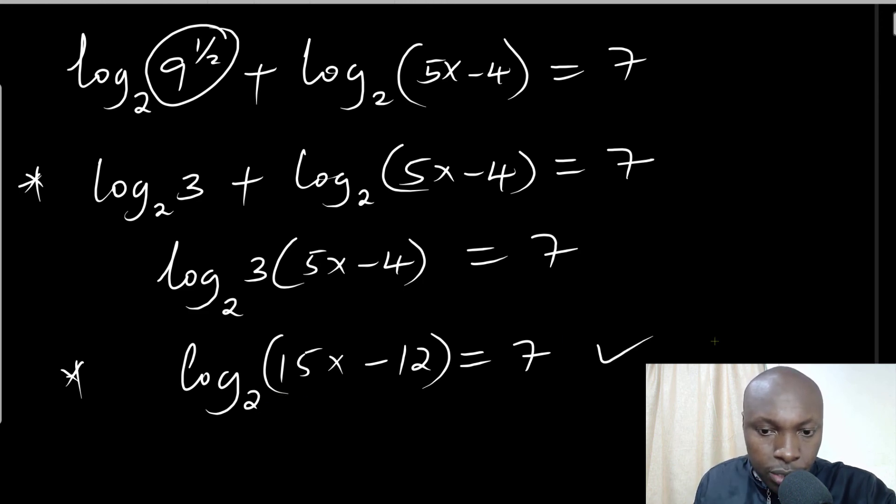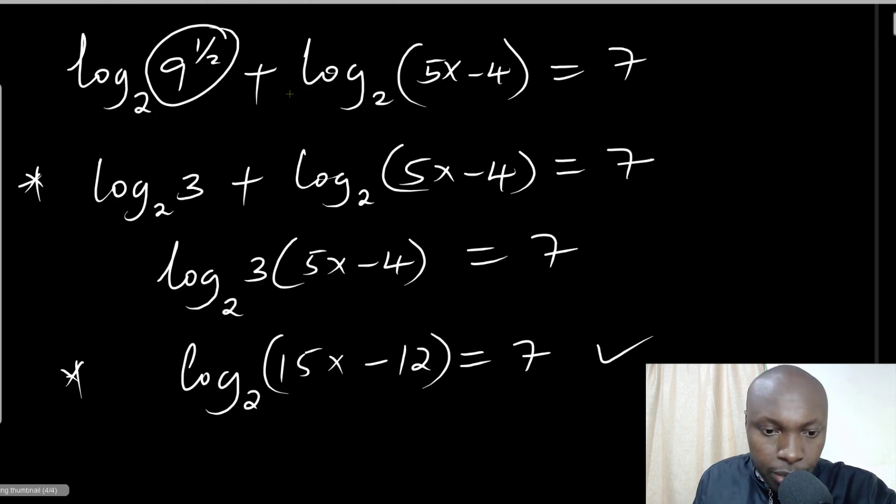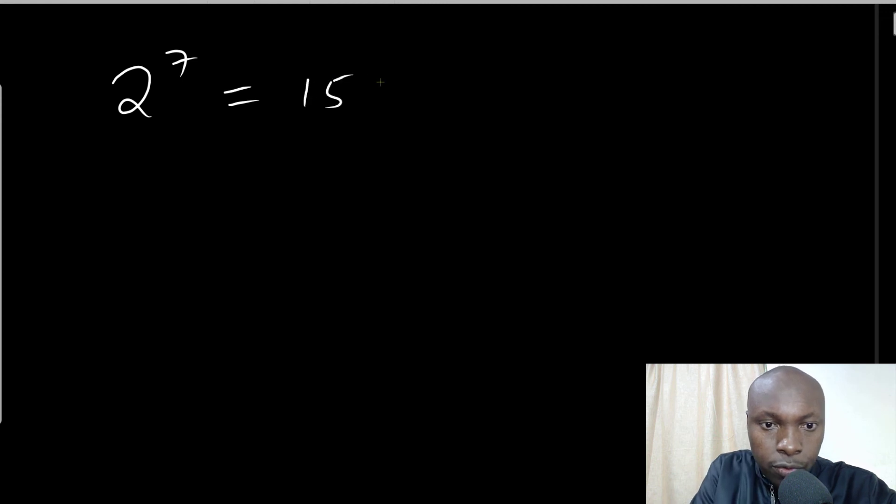We shall get 2^7 = 15x - 12. 2^7 is 128, so 128 = 15x - 12.